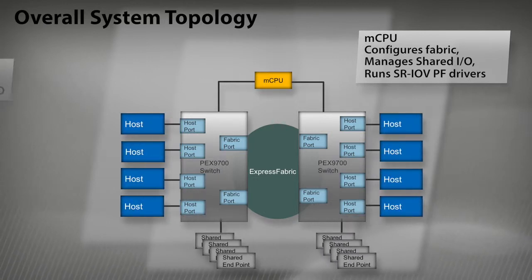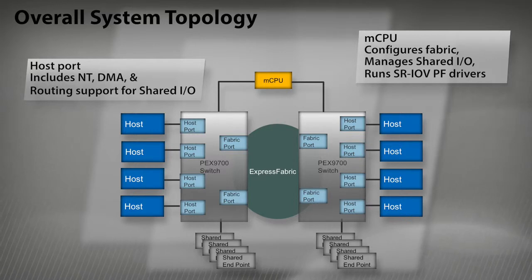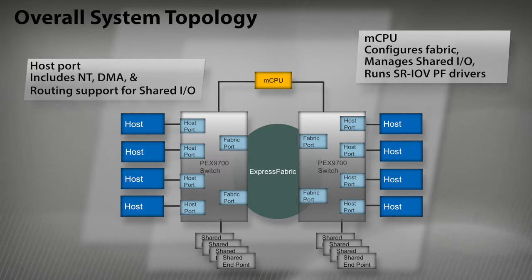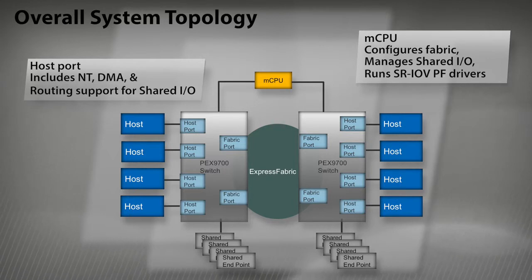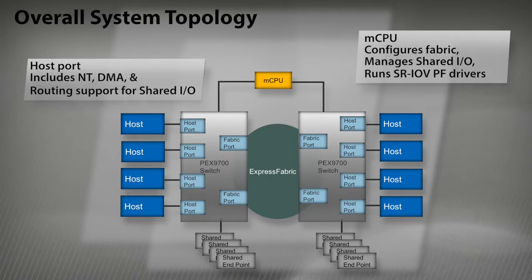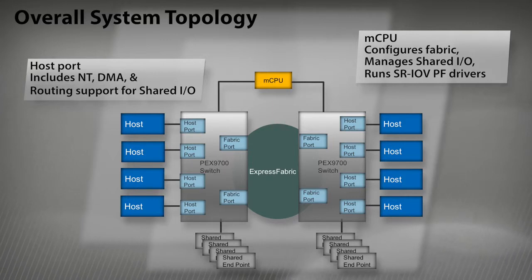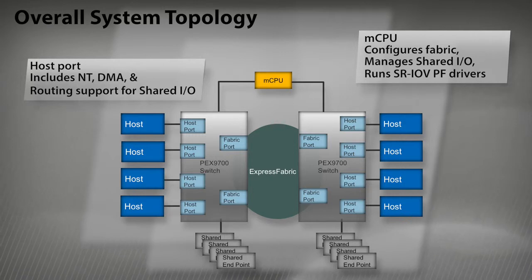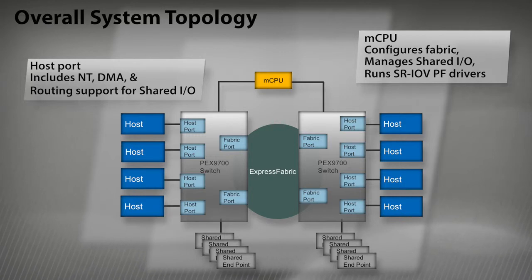This topology can be extended by connecting smaller clusters of host nodes and IOs through data center routing and switching technologies that already exist. Avago has customers implementing 16 to 20 node clusters, and others testing topologies that extend to hundreds of nodes.